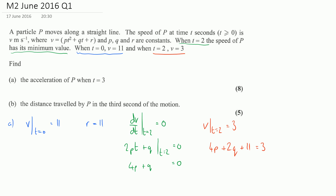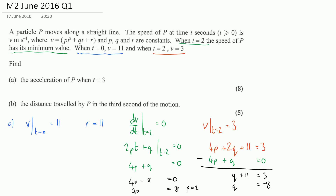Now we have a system of simultaneous equations. Subtracting the first equation from the second — 4p plus q equals 0 — we end up with q plus 11 equals 3, so q is equal to minus 8. Substituting back: 4p minus 8 equals 0, so 4p equals 8, which tells us that p must be 2.